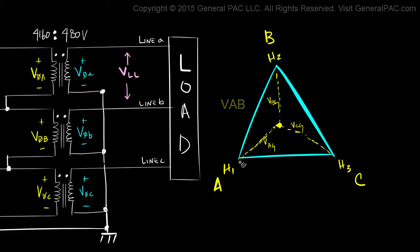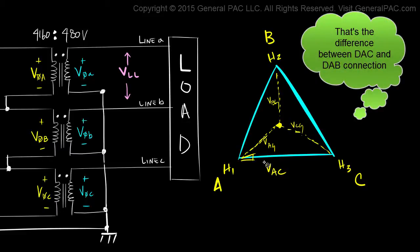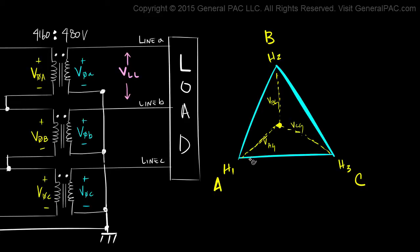Or does this phasor right here represent VAC? And if so, is it connected like that? Now depending on what we choose or how we define these two phasors, that's going to be an entirely different delta connection.